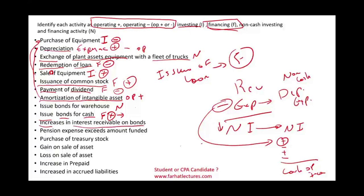Increase in interest receivable on bonds: a receivable is a current asset. When a current asset goes up, your cash flow goes down. It means you are generating income without getting the cash. When your receivable goes up, it means you are reporting revenues, but that revenue is non-cash.